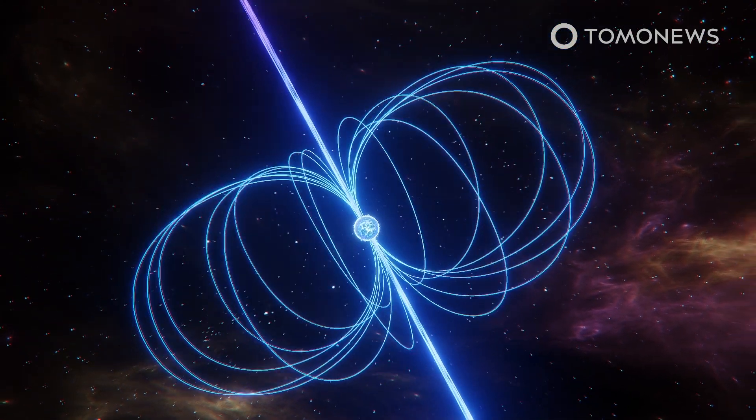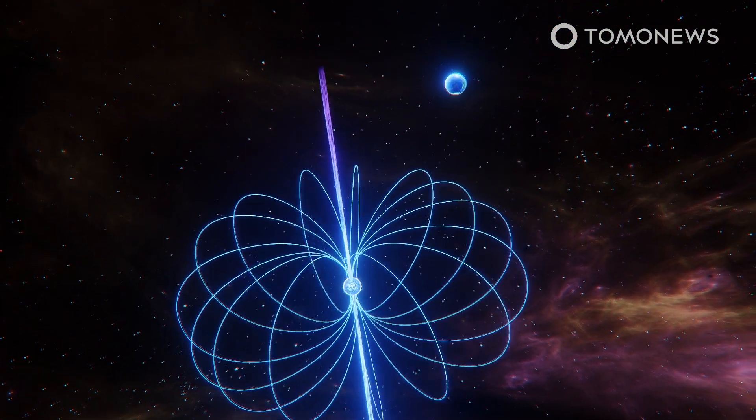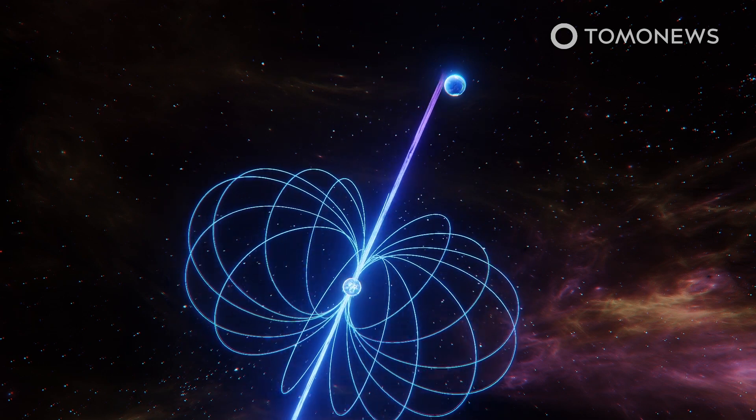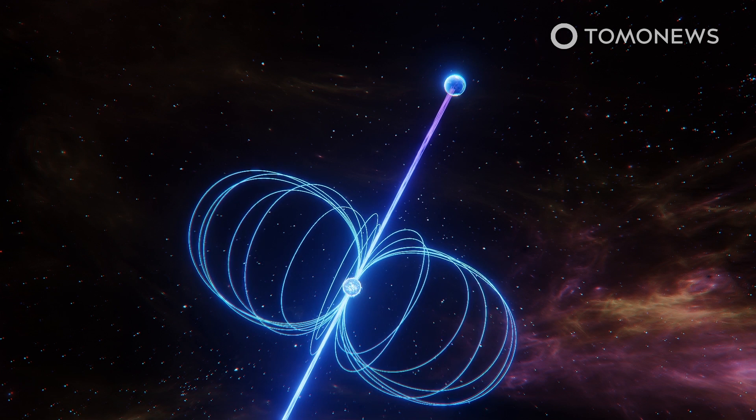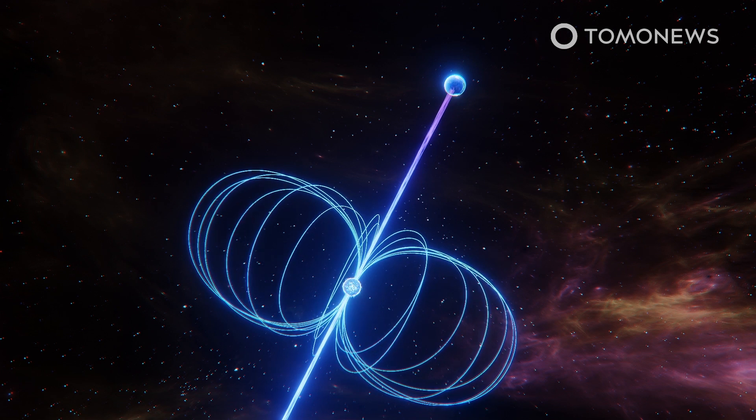According to NASA, a pulsar is a neutron star that emits beams of radiation that sweep through the Earth's line of sight. The pulses of high-energy radiation we see from a pulsar are due to a misalignment of the neutron star's rotation axis and its magnetic axis.